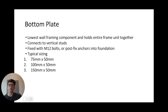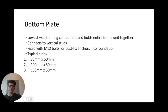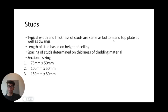The bottom plate is the lowest wall framing component, holding the entire external wall framing unit together and connecting with the vertical studs. On the ground floor, it is always bolted with M12 bolts or post-fix anchors into the concrete or foundation; on upper floors it connects into the floorboards and bearers. The typical length is determined by the dimensions of the room or external faces. The typical width and thickness are the same as the top plate, studs, and dwangs, with sectional sizes of 75×50, 100×50, or 150×50. Here is a photo of the bottom plate with the M12 bolt holding it down into the foundation.